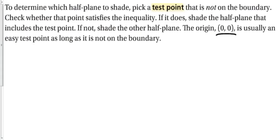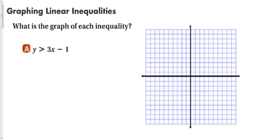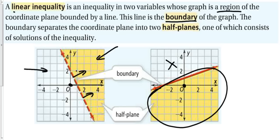Let's graph one of these. The easiest and best way to graph an inequality is to put it into slope-intercept form and graph the line, then figure out which way the region goes. This inequality is already in slope-intercept form. The y-intercept is negative 1, so we put a dot there. The slope is 3, so that's up 3 over 1. Notice the difference between a dotted line and a solid line — dotted lines happen when we have strictly greater than or strictly less than.